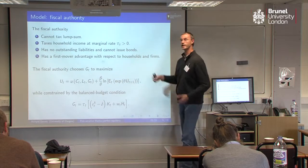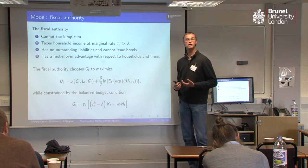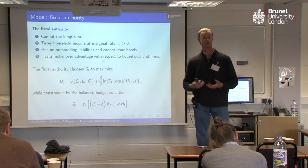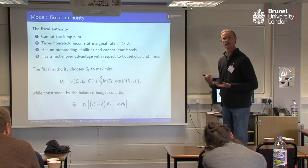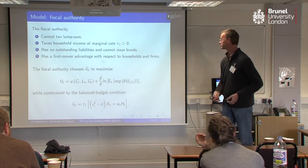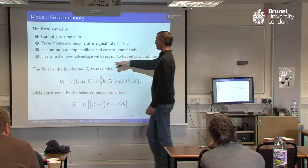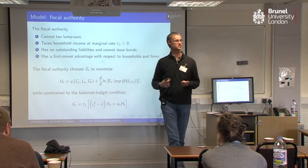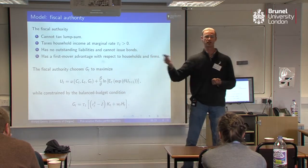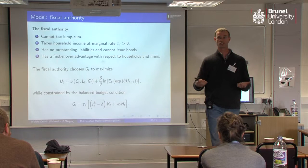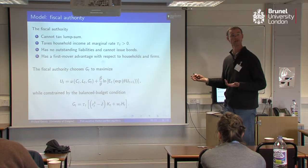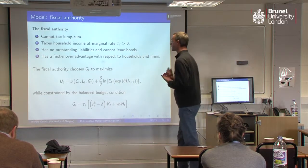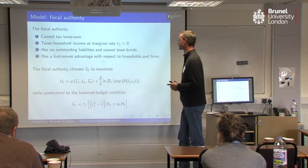Households and firms are going to be making their decisions simultaneously. So when you think about that first mover advantage, what the government's got to do is work out how its decision affects the other agents in the economy — what's the reaction to its decision. So we're going to be solving the model backwards within the period and then backwards over time.